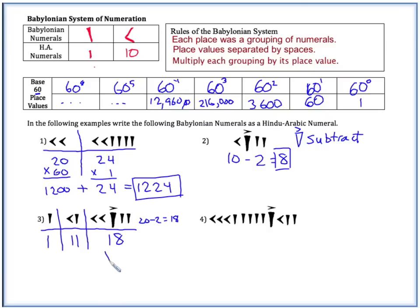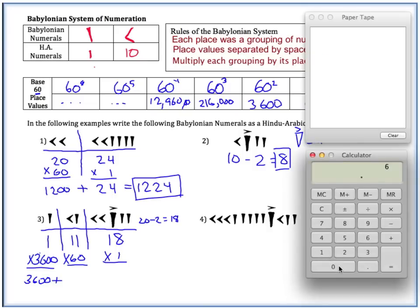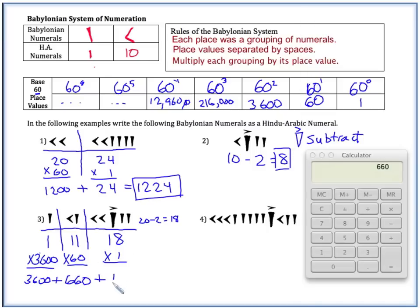What this means is we have 18 groups of 1, so it's just 18 times 1. We have 11 groups of 60, so that's going to be times 60. Then we have one group of 3,600. So this becomes 3,600 plus 11 times 60, and that's 660, and then 18 times 1, which is just 18. Then we want to add all these up. So we get 3,600 plus 660 plus 18. So we get the number 4,278.